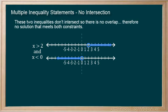If they don't intersect, there are no values that satisfy both statements. No values of x can be both greater than 2 and less than 0 at the same time. Our solution is said to be an empty set.